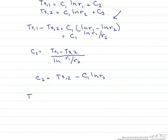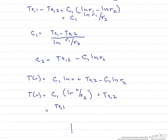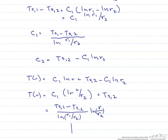we get T(r) equals (Ts,1 minus Ts,2) divided by ln(r1/r2) times ln(r/r2) plus Ts,2. So here's our temperature distribution that we were trying to find.